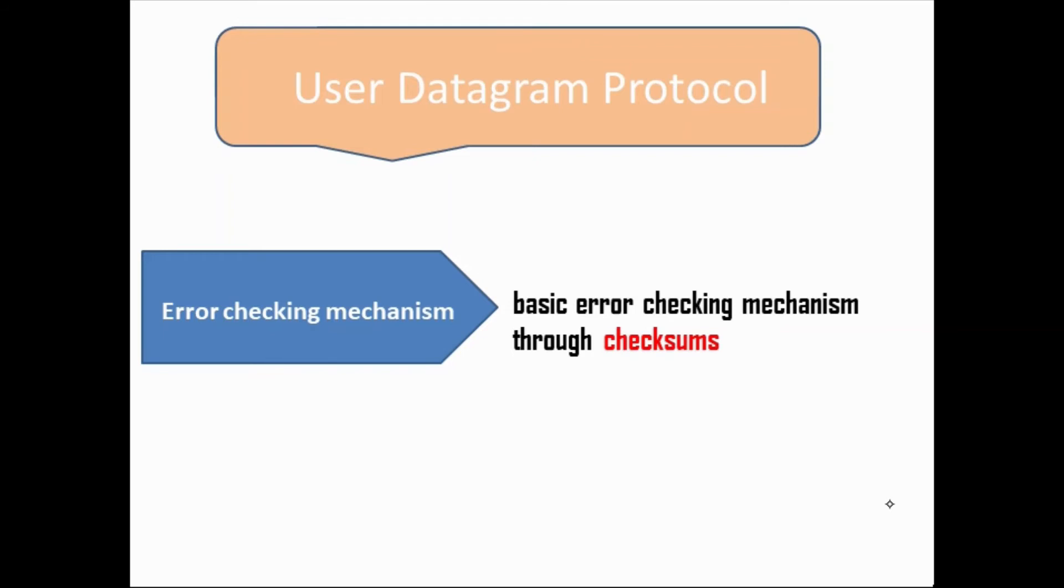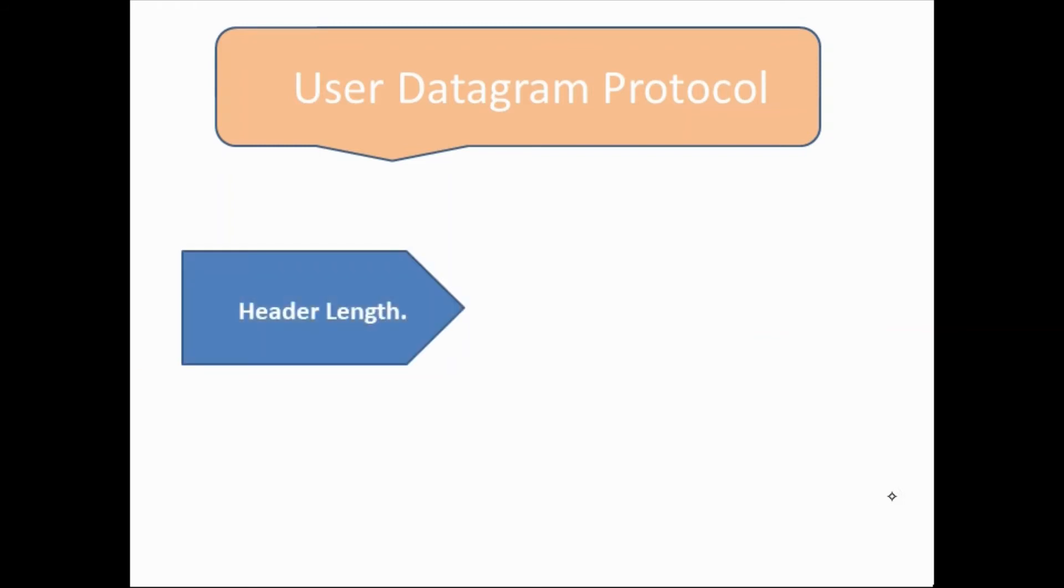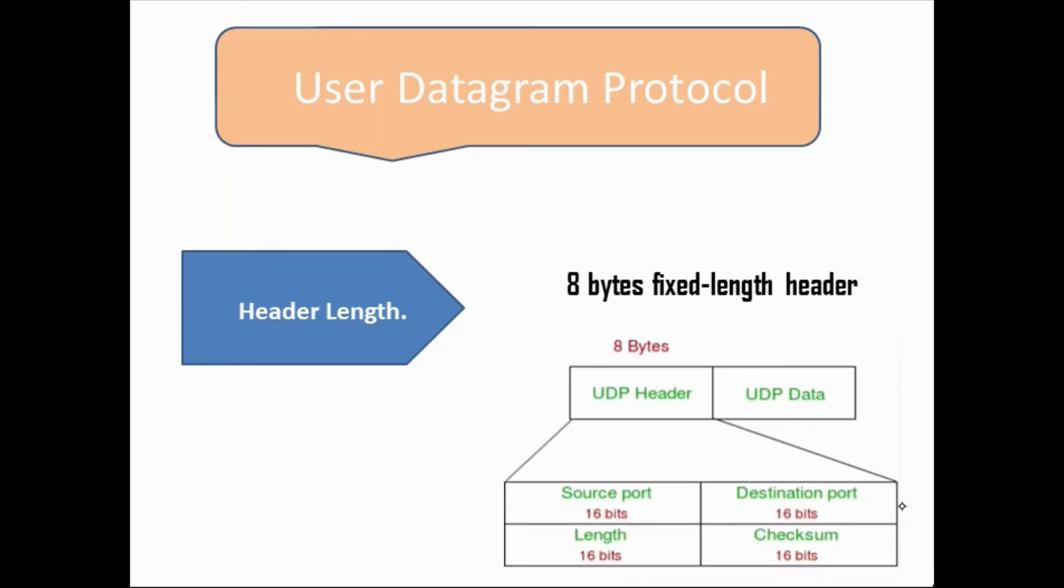After the error checking mechanism, we have header length. UDP has 8 bytes of fixed header length. As you can see on the screen, there is a diagram. It has source port, destination port, length, and checksum. All of them are 16 bits, so every 16 bits is called 2 bytes. So 2 bytes times 4 means 8 bytes fixed length of header.